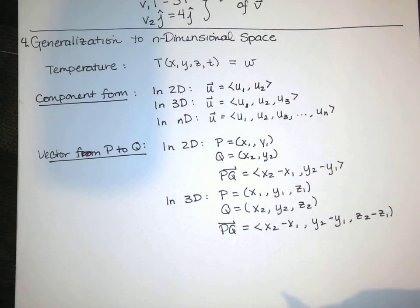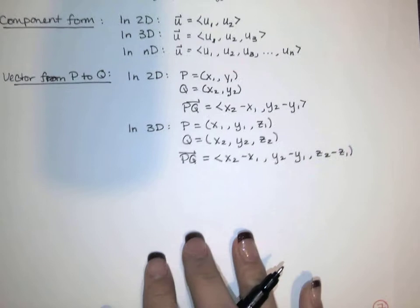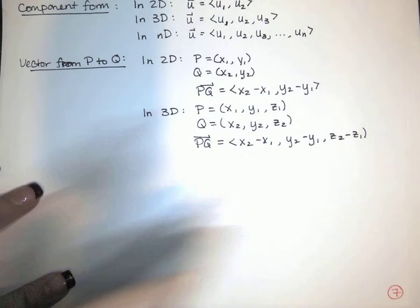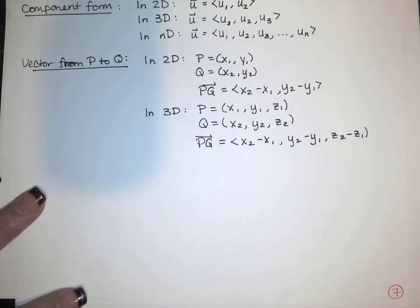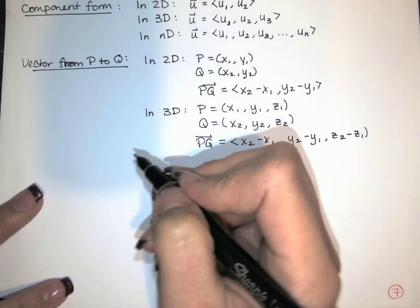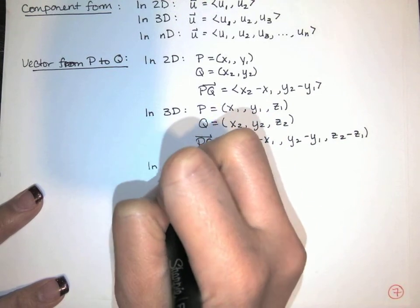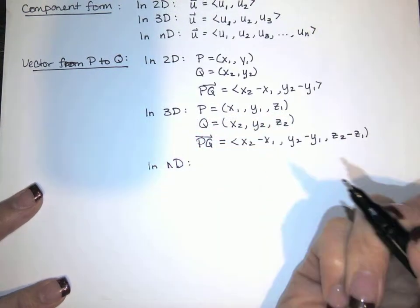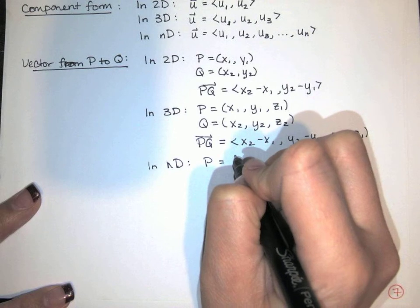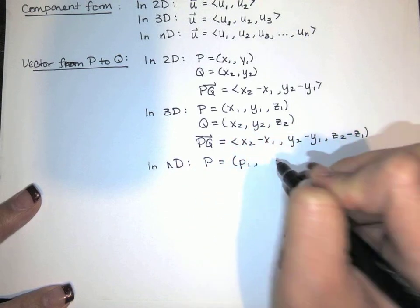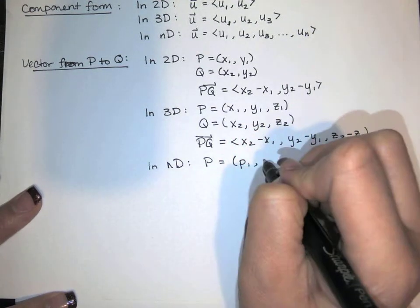Now, for the next one, it's a little bit harder to stay consistent with my notation, because I'm running out of letters, and I don't know which n letters I'm using. So in n dimensions, I'm going to use slightly different notation. Don't let it bother you. I'm going to call point p, p1, p2, all the way through p sub n.